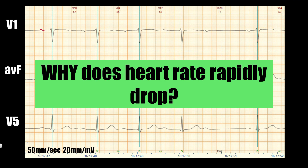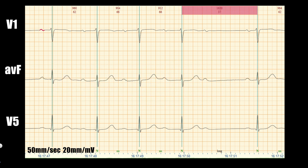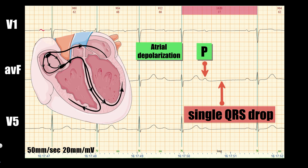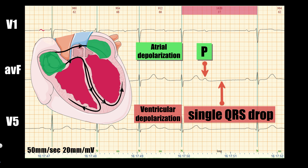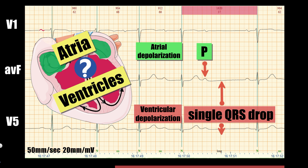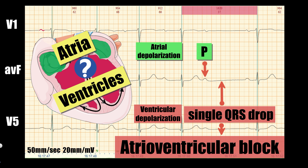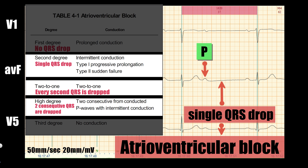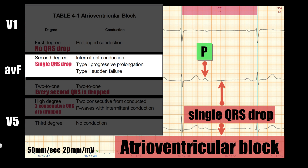Now let's find out why we have that rapid heart rate drop. Inside the long RR interval, we see one sinus P wave which is not followed by a QRS complex — this is a single QRS drop. The P wave as atrial depolarization is present, but QRS as ventricular depolarization is absent. So something is wrong with the conduction between the atria and ventricles, indicating some kind of atrioventricular block. A QRS drop means at least 2nd degree AV block, and with only one QRS drop, this is no higher than 2nd degree AV block.